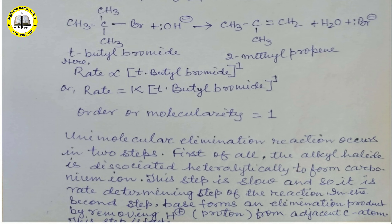We can say that dehydrohalogenation of tertiary butyl bromide with aqueous sodium hydroxide solution is a very good example of E1 reaction। यानि tertiary butyl bromide की प्रतिक्रिया sodium hydroxide से कराने पर 2-methylpropene प्राप्त होता है और यह E1 reaction का एक अच्छा उदाहरण है।